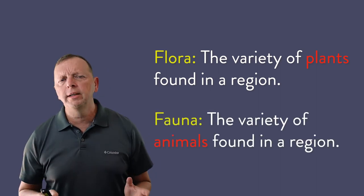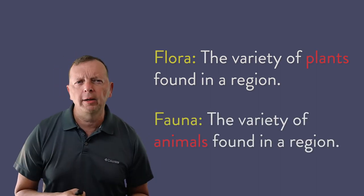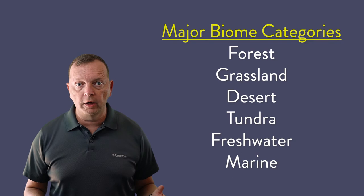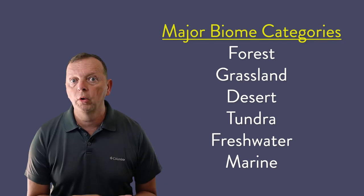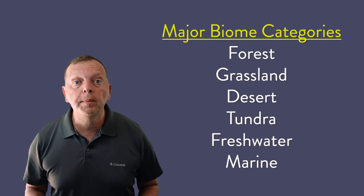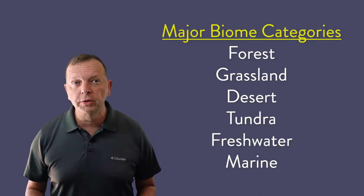Now, while it's fascinating to discuss how the biome supports different sets of fauna, due to time in this lesson, we're going to limit our discussion to the type of vegetation or flora that each biome supports. There are several broad groups of biomes: forest, grassland, desert, tundra, freshwater, and even marine biomes.